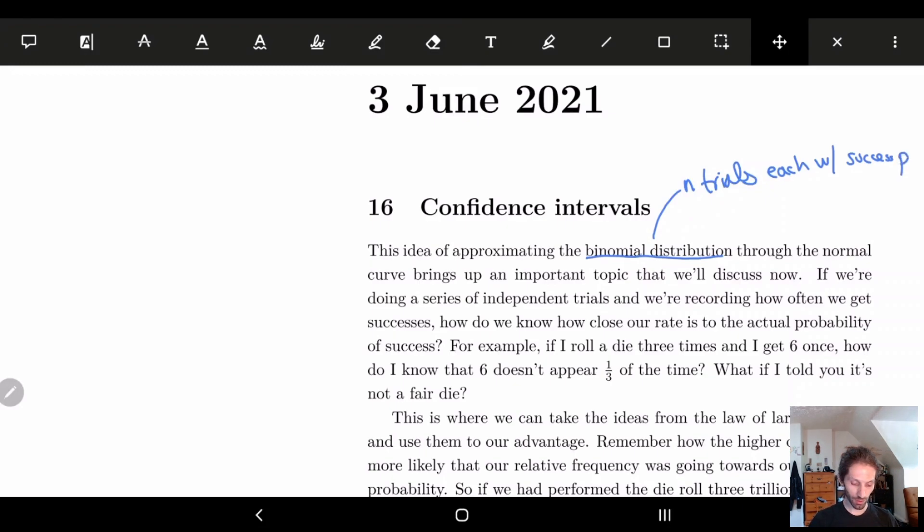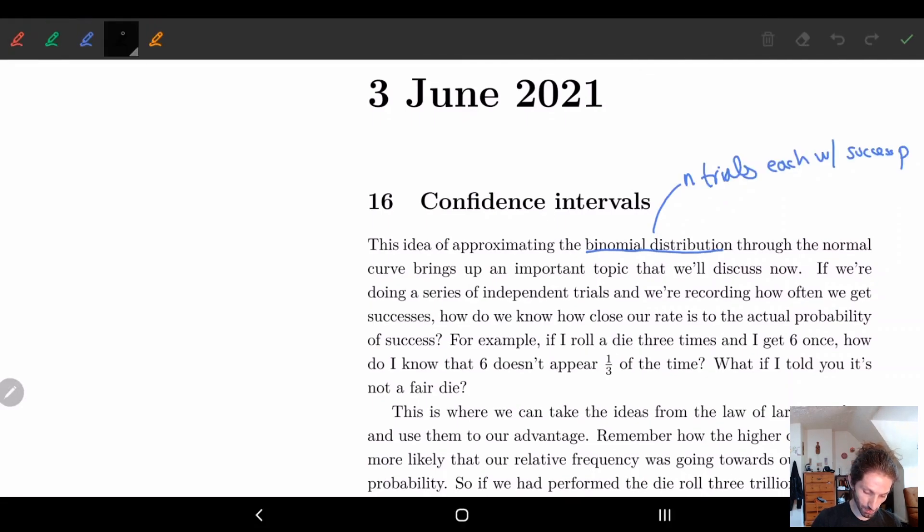And remember how what we kind of did for this is we drew the Pascal's triangle. So we had one, one, one, one, one, two, one. And we labeled these with p and one minus p to kind of figure out what are the chances of something occurring, right? And we found out that the probability of something happening k times out of n, so the probability of k in this case was n choose k times p to the k and then one minus p to the n minus k. So this was the distribution that we talked about. So this is the binomial distribution.